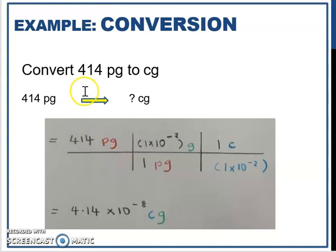So let's look at an exercise. Convert 414 picogram to centigram. So 414 picogram, you want to remove pico and add centi. We know pico needs to be removed, so put it at the bottom in the opposite position so they can cancel. The value of pico is 1 times 10 to the power of negative 12.